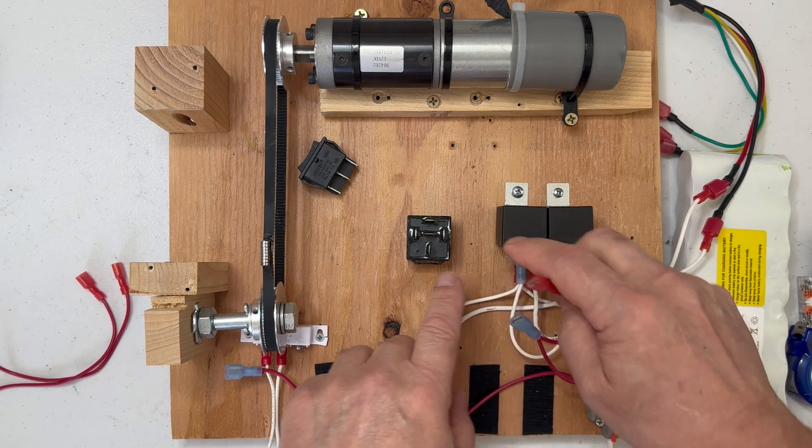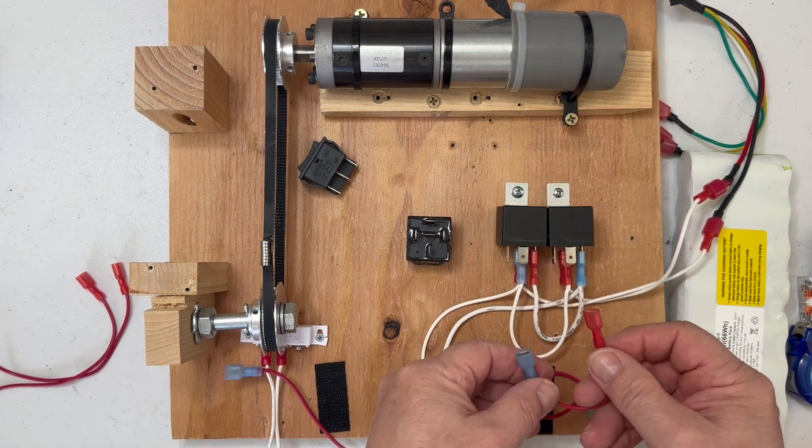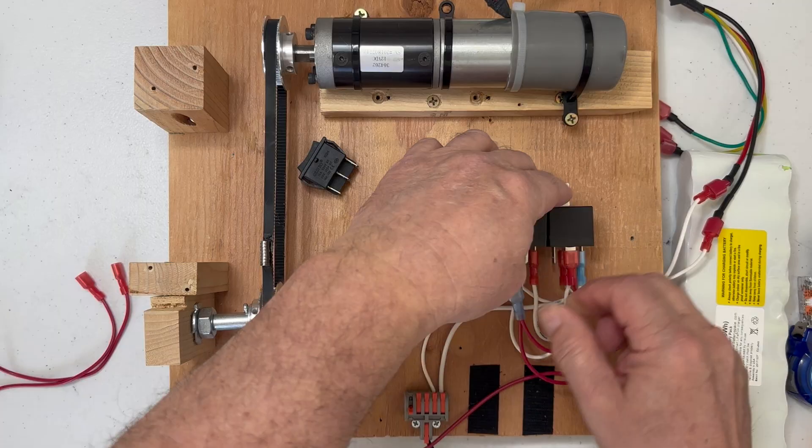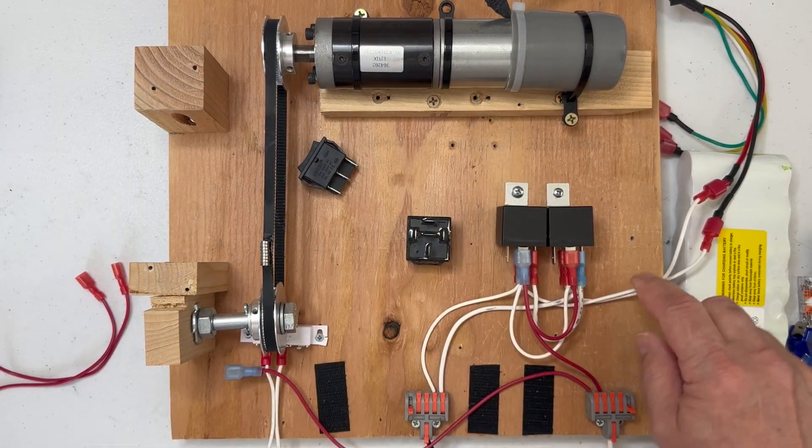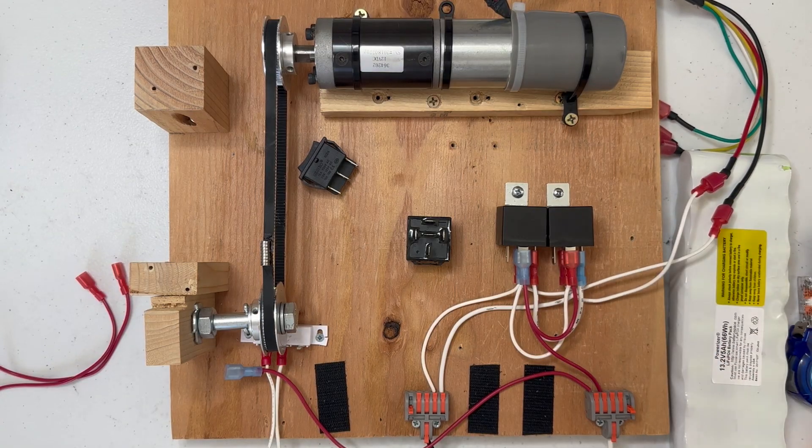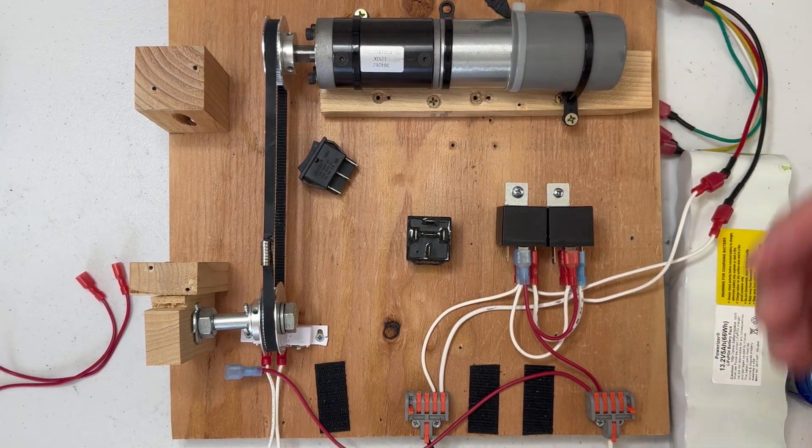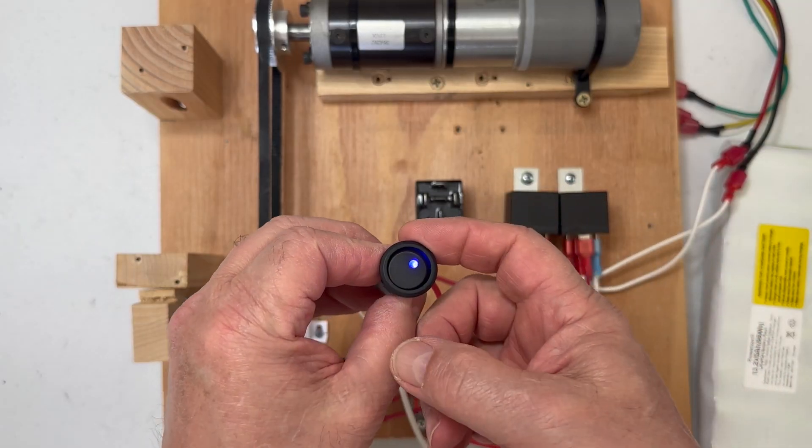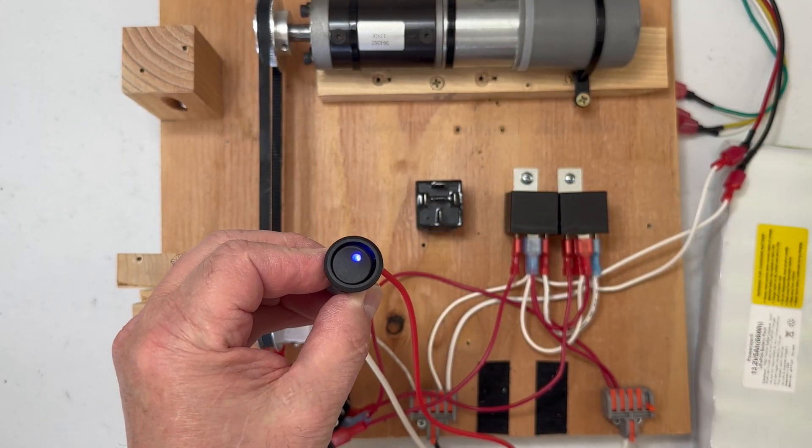On the top post here, this one up here, we're going to put our positives. So right now what's feeding the motor is two negatives, two grounds. Nothing's going to happen, you can see the motor's not turning. Even if I turn on the power, you'll see nothing's happening.